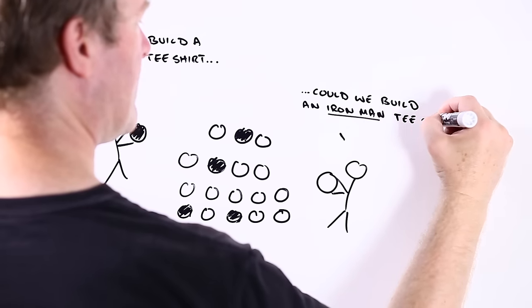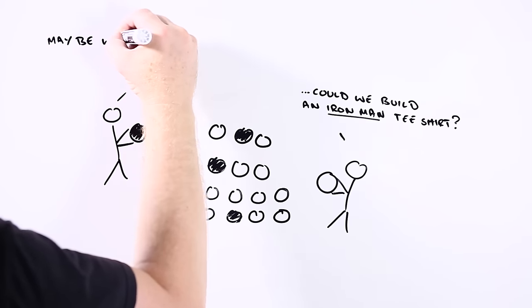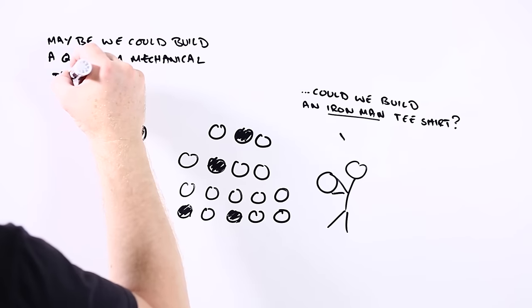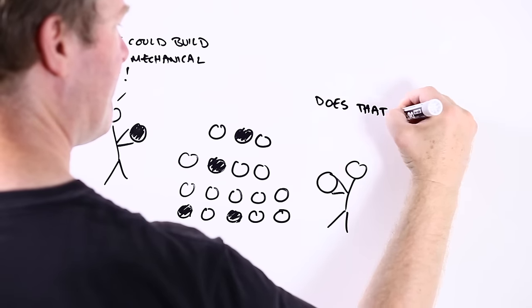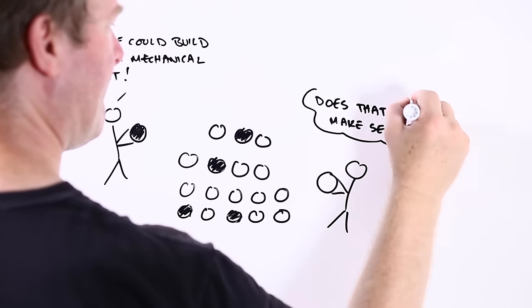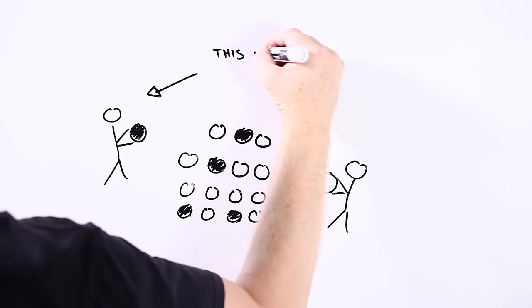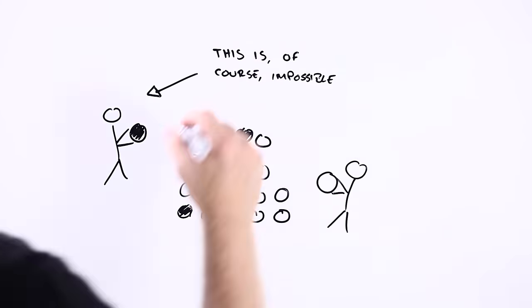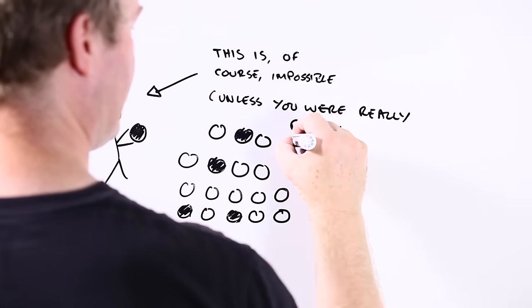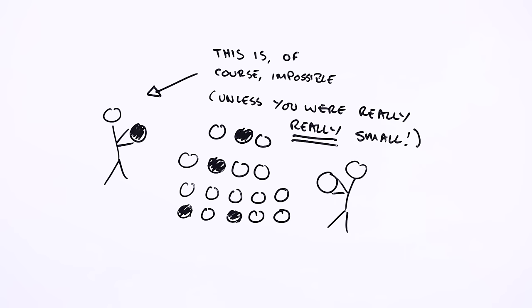We could even start to create stuff that behaves in quite unusual ways, because when you start playing around with atoms, you can tap into some really weird quantum physics. The trouble is, atoms are really small. More than a million times smaller than the tip of your pinky finger. And that means they're not that easy to work with.